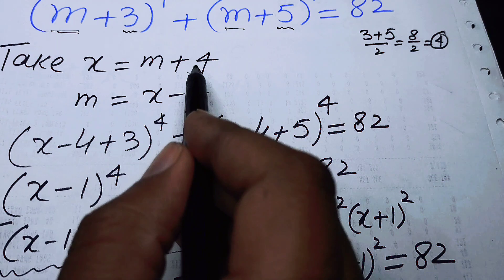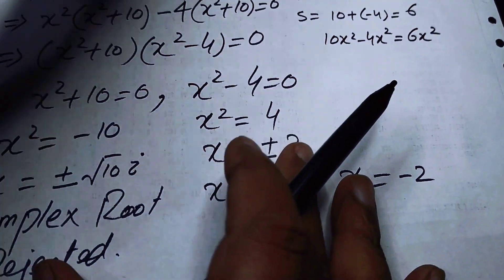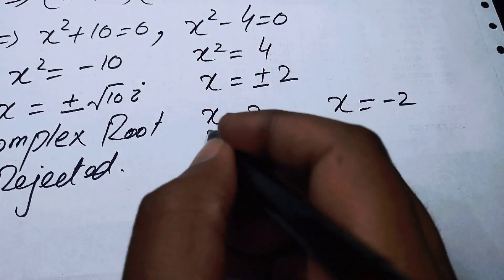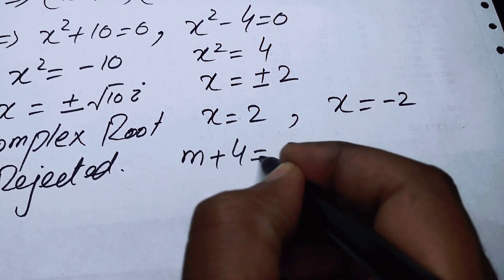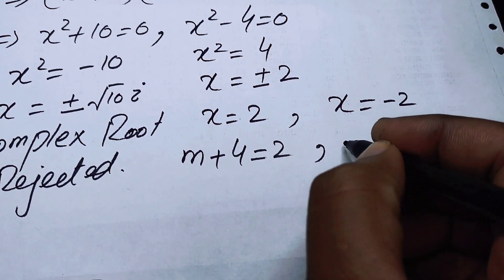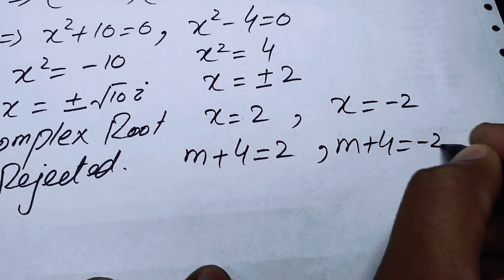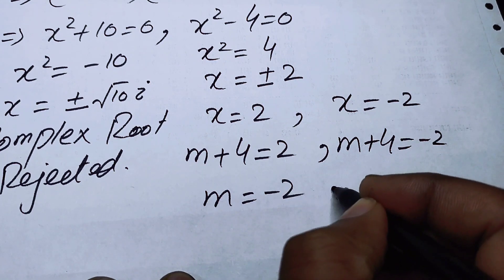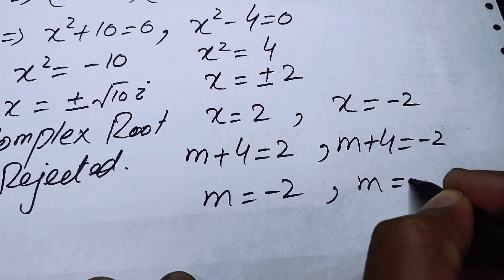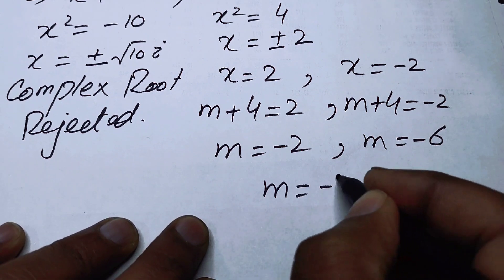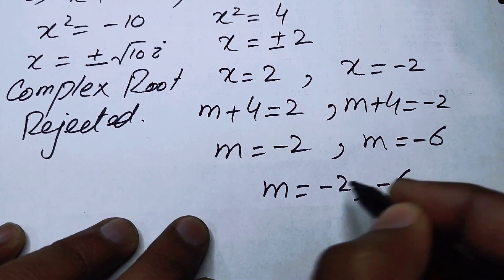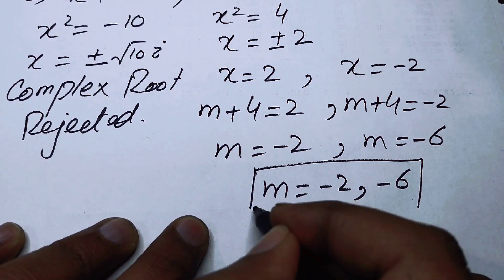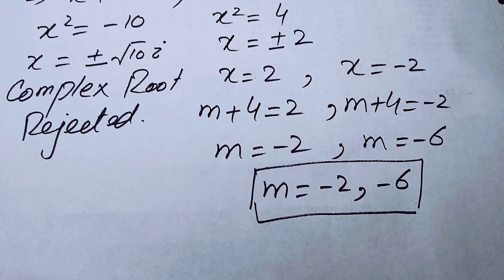Now we back-substitute using X = m + 4. For X = 2: m + 4 = 2, so m = -2. For X = -2: m + 4 = -2, so m = -6. The final answer is m = -2 and m = -6. Thank you so much for watching this video — please subscribe to my channel for more exciting videos.